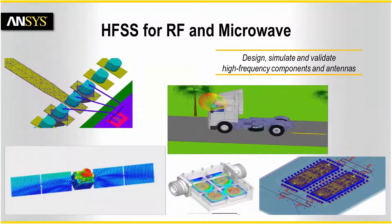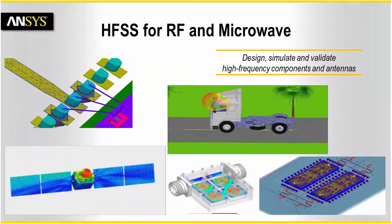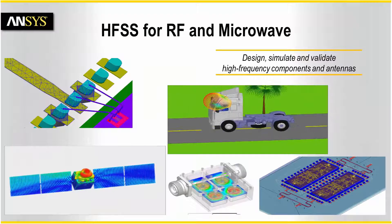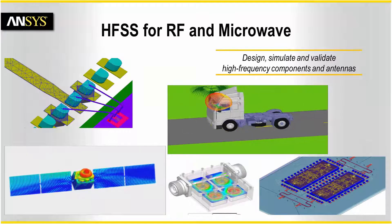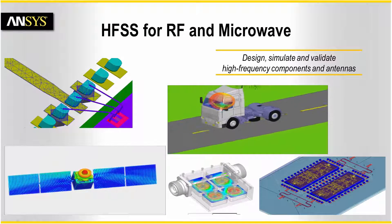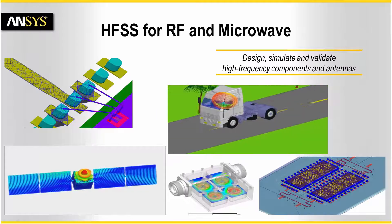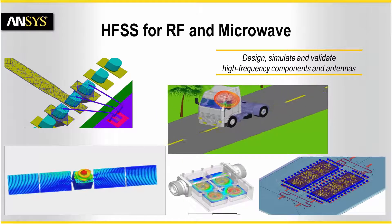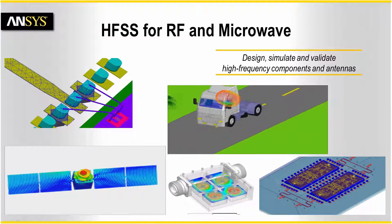For RF and microwave, HFSS is used to calculate antenna radiation, radar cross-section, microwave circuits and parasitics, biomedical simulations, and more.